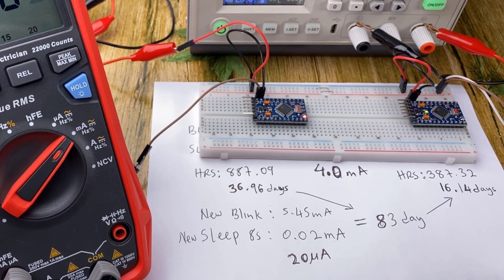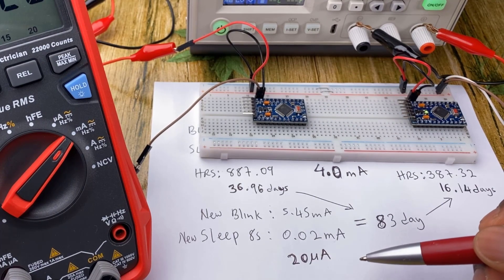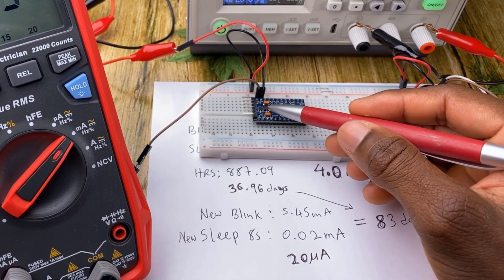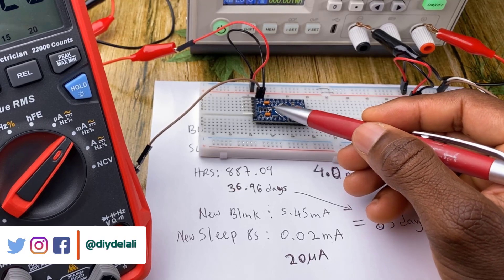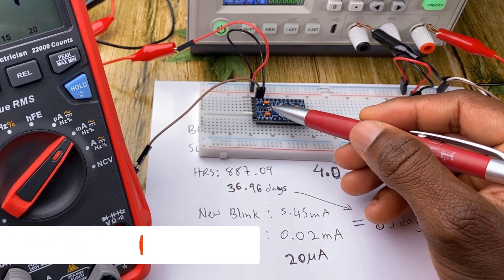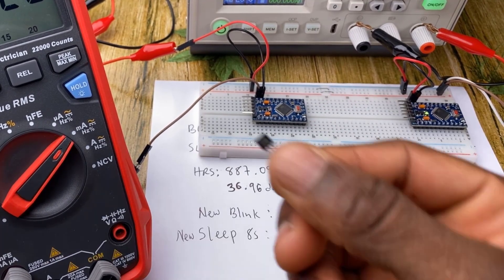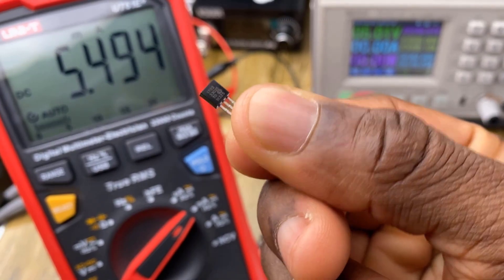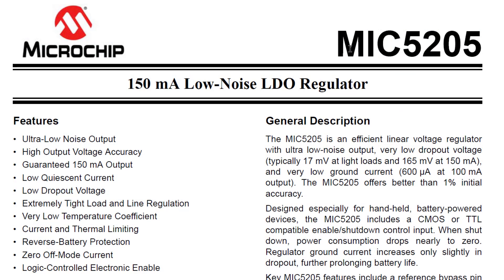At this point, we have to ask ourselves, is there anything else we can improve on this board? And the answer as always is yes. We can improve the regulator. We can swap out the original MIC5205 low dropout 3.3 volts regulator that comes with the Pro Mini for a 3.3 volt MCP1702. Looking at the datasheet of the MIC5205 that comes with the Pro Mini, we can see that it's a 150 milliamp regulator.